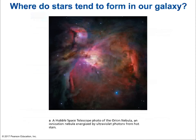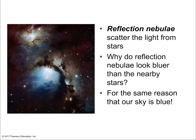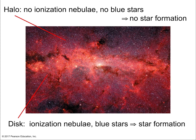Where do stars tend to form in our galaxy? Ionized nebulae are found around short-lived high-mass stars, signifying active star formation. Reflection nebulae scatter the light from stars and appear bluer than nearby stars for the same reason the sky looks blue — shorter wavelength visible light gets scattered off in all directions while longer wavelength light passes through. In the halo, there are no ionization nebulae and no blue stars — only old red stars, with no ongoing star formation. The disk, on the other hand, is full of ionization nebulae and blue stars.